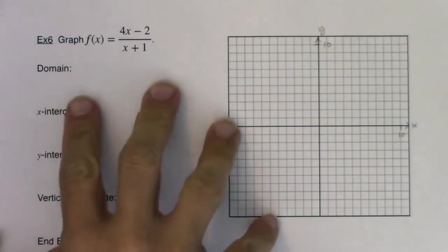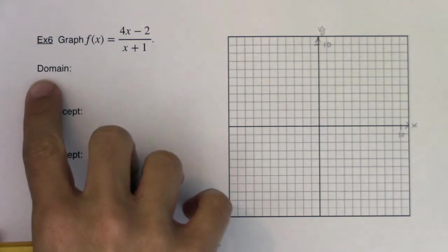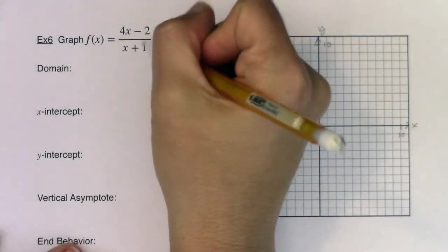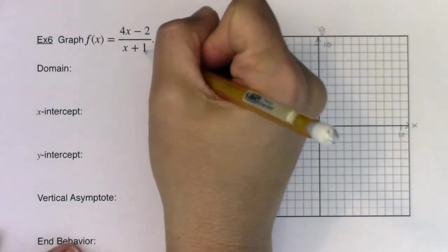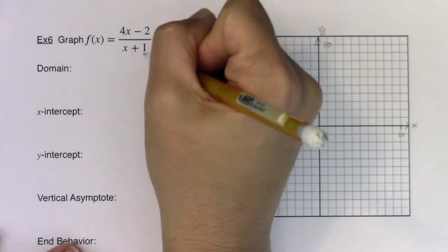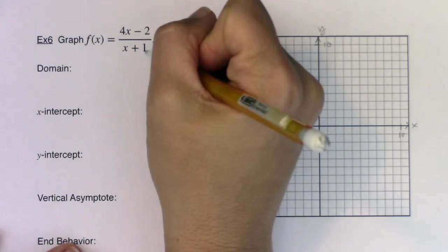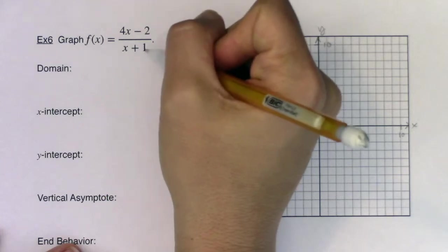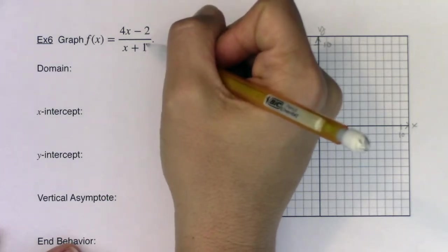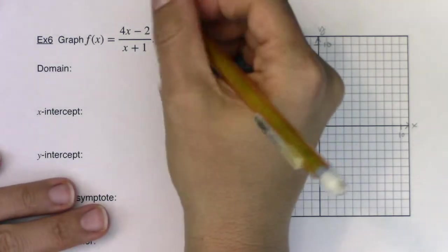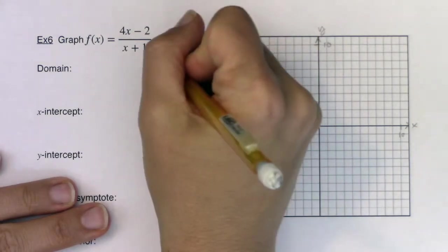Alright, anytime it comes to graphing a function, start with the domain. And I would actually, even before that, factor anything that I could, but I can't factor either my numerator or denominator because they're already factored. So I don't have to really worry about that. Okay, but in terms of what zeroes out, let's start to work this.